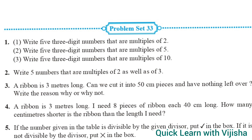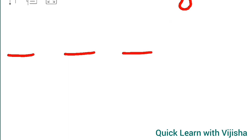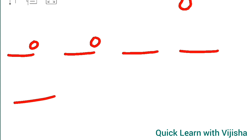Coming to the third question: write 5 three-digit numbers that are multiples of 10. We already learned that for the test of divisibility by 10, the units place should have the value 0. I need to find 5 numbers, each with 3 digits. The basic rule is: units place should be only 0.